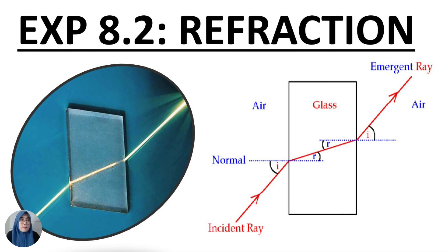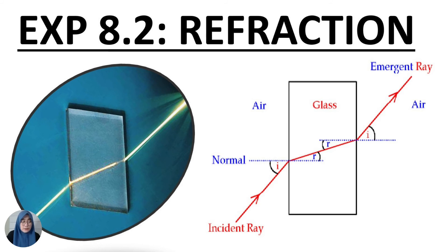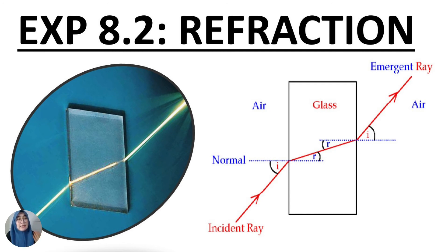Next is a pencil appearing bent. A pencil appears bent in water because light is refracted away from the normal when it travels from a denser medium — water — to a less dense medium — air. That is the concept of refraction of light.